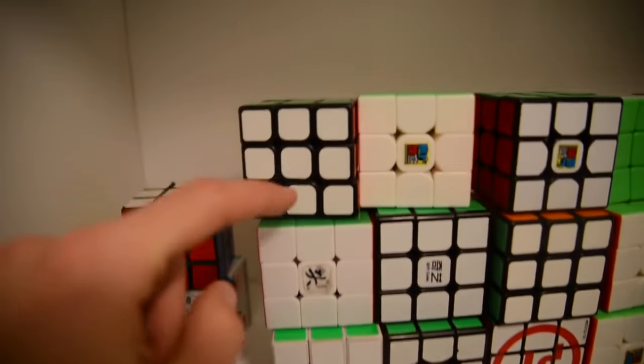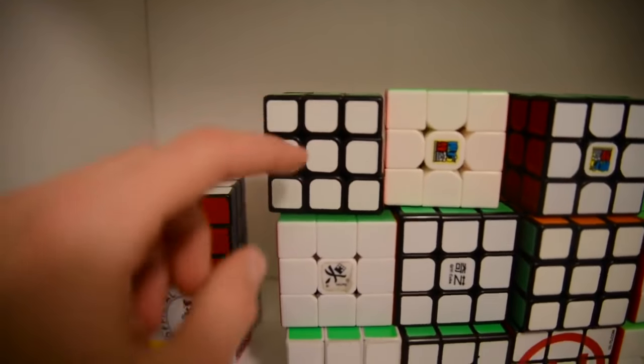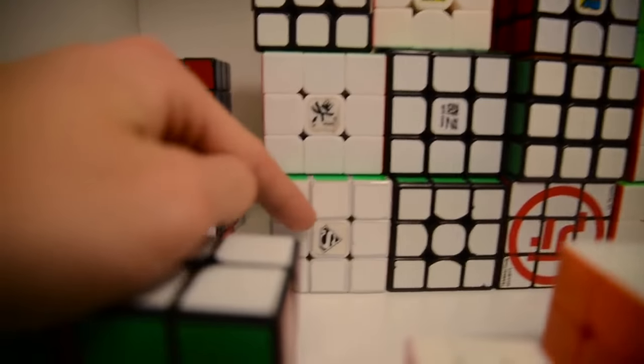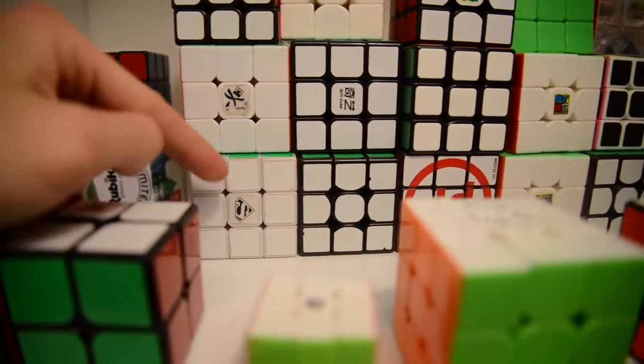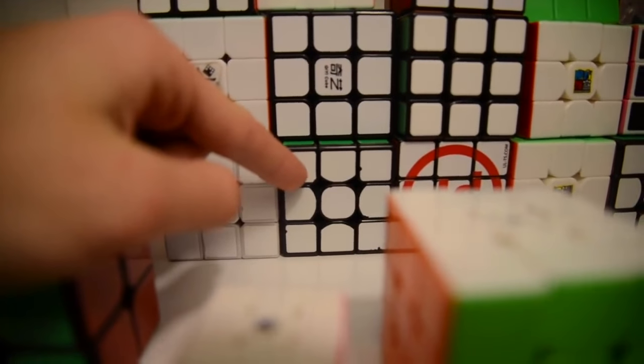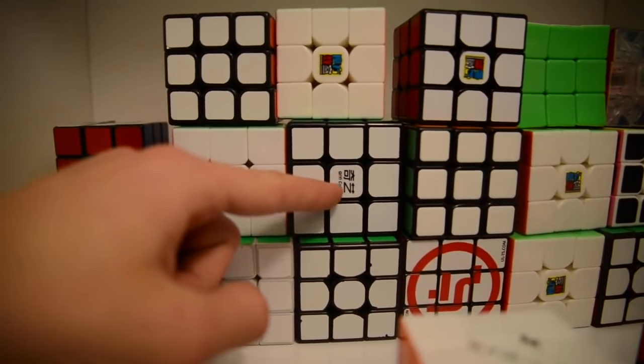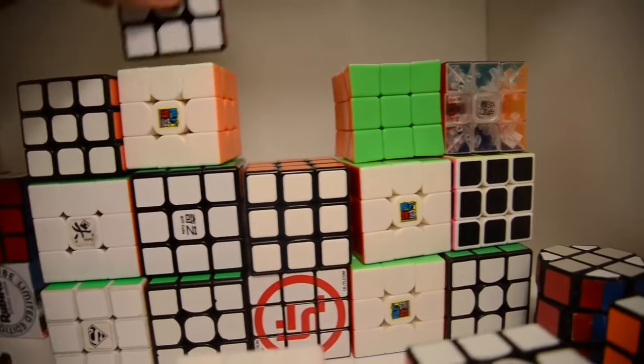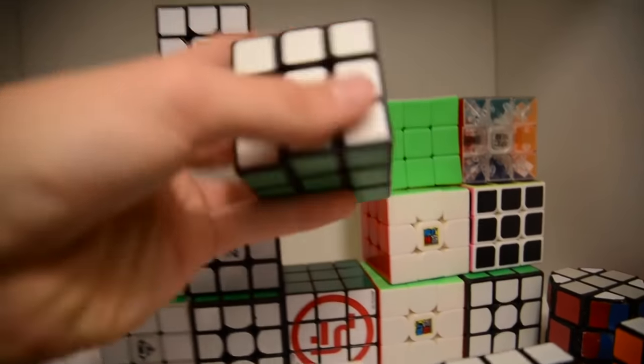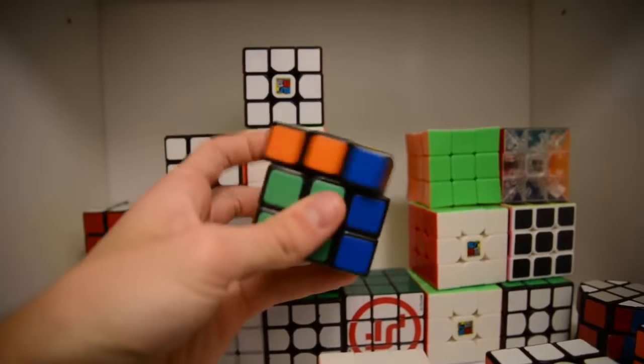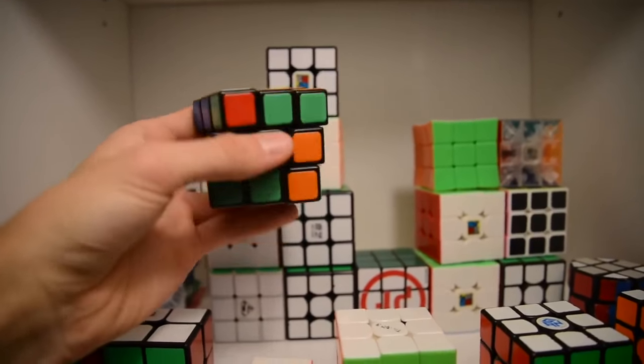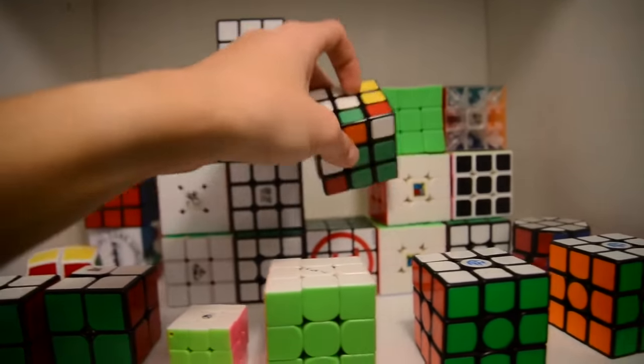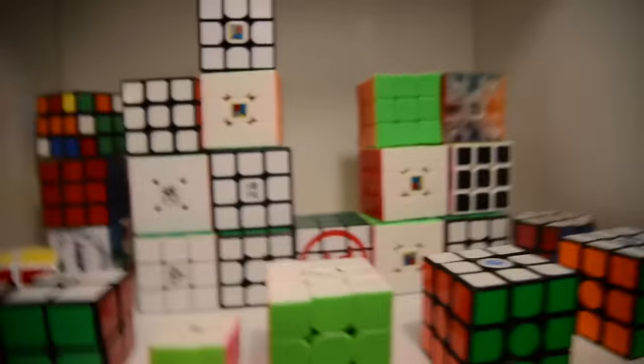Back here we have the GAN Long. Bad cube. Stickerless Zhanchi. Weilong version 1. Really OG cube. Weilong GTS version 1. The Sail 56mm. MF3RS version 1. MF3RS version 2. And here we have the Rubik's Speed cube that I used in the Nations Cup.